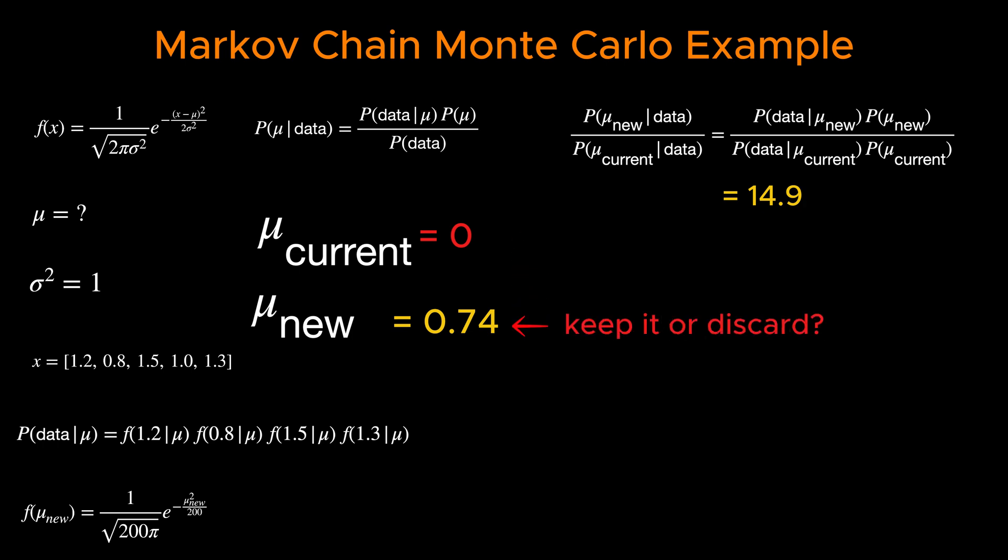At this point, we need an acceptance criterion for the new μ. That means we need to decide if we want to keep this μ in a container to be averaged over at the end or throw it out.